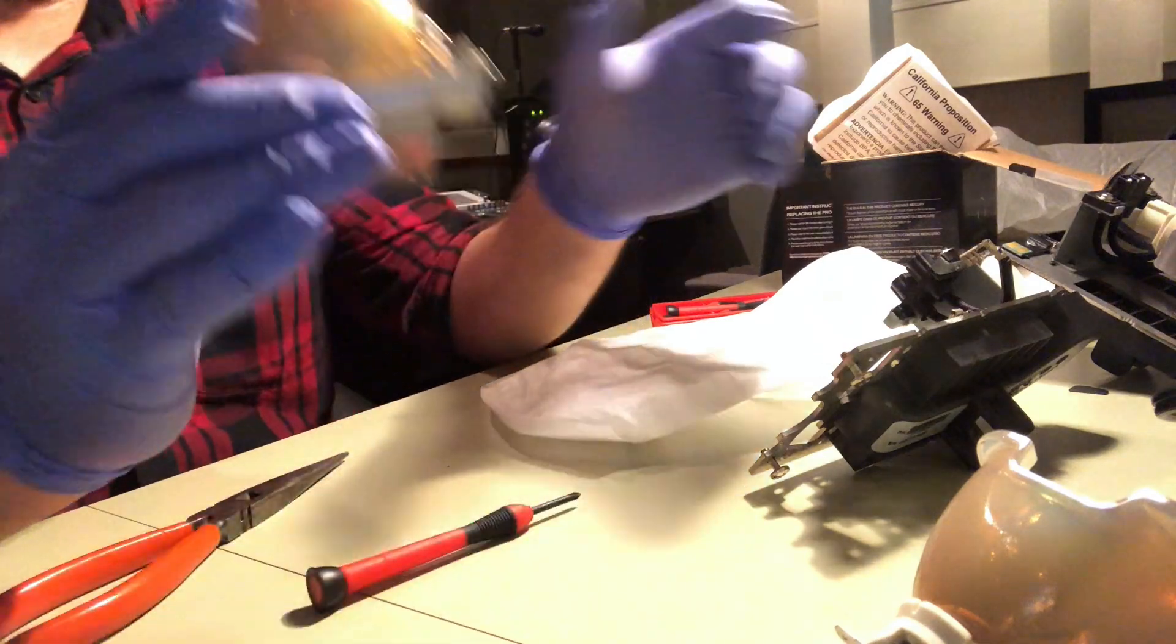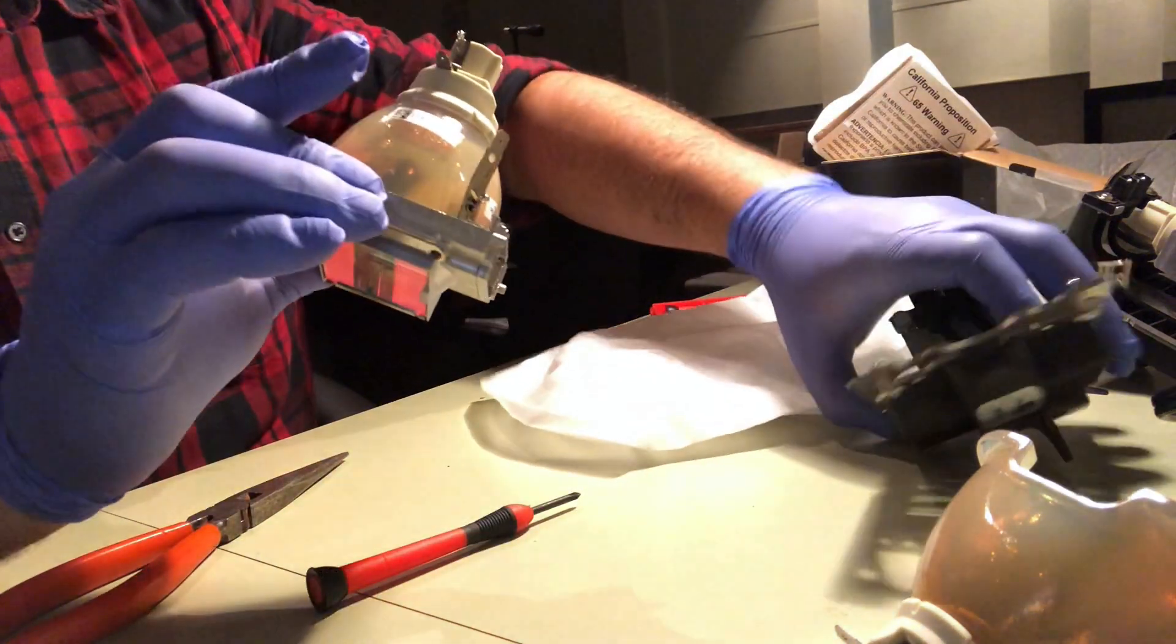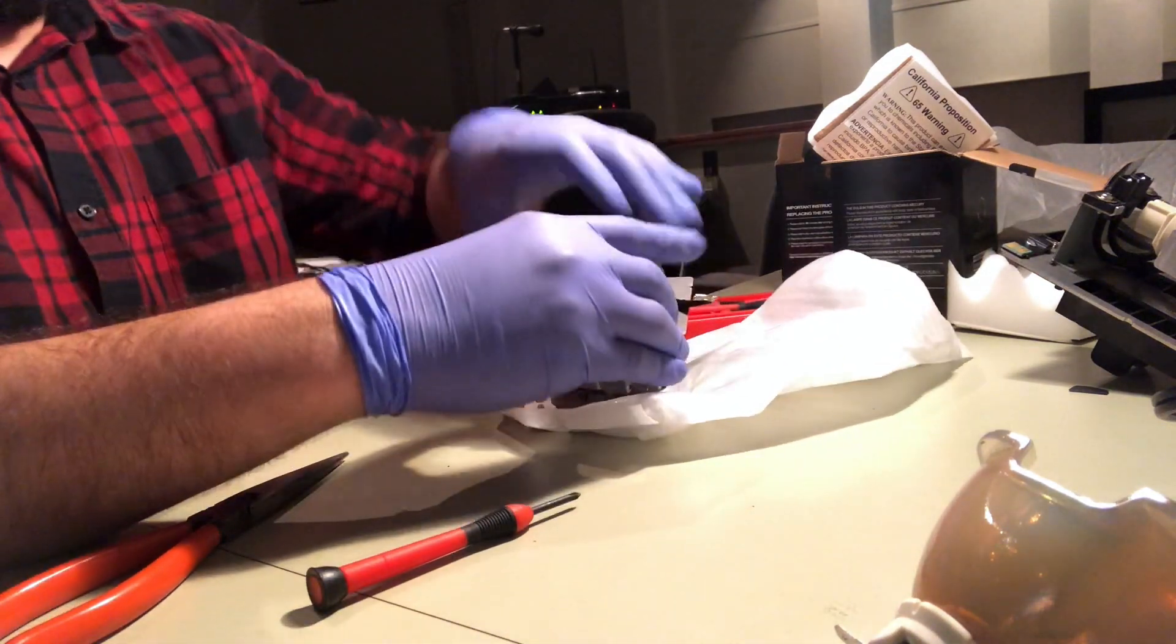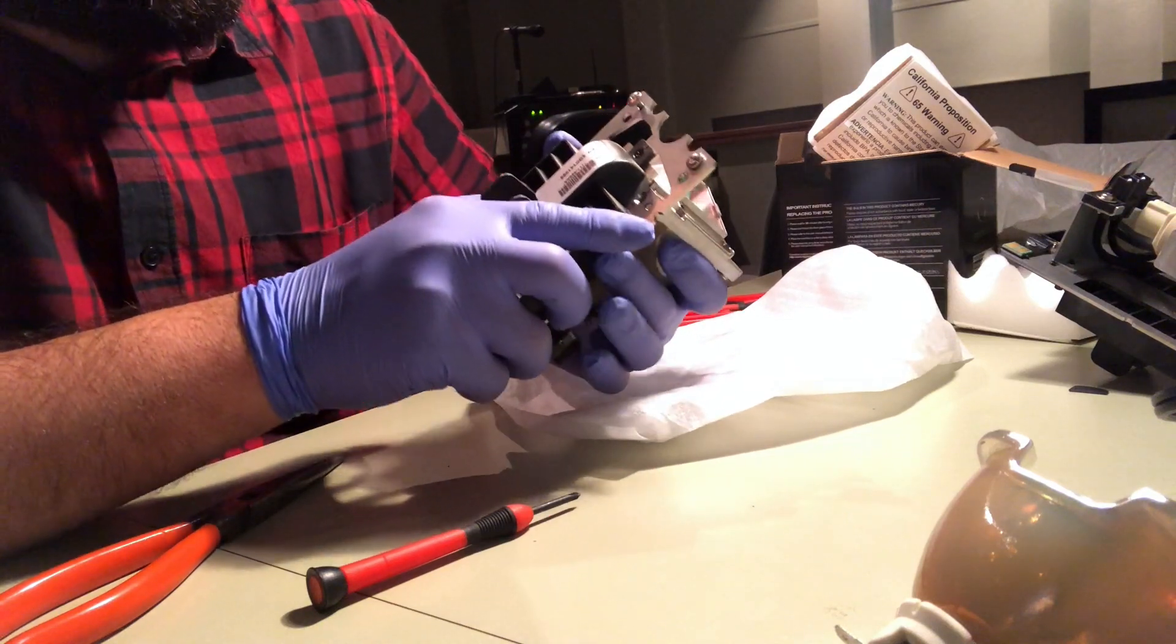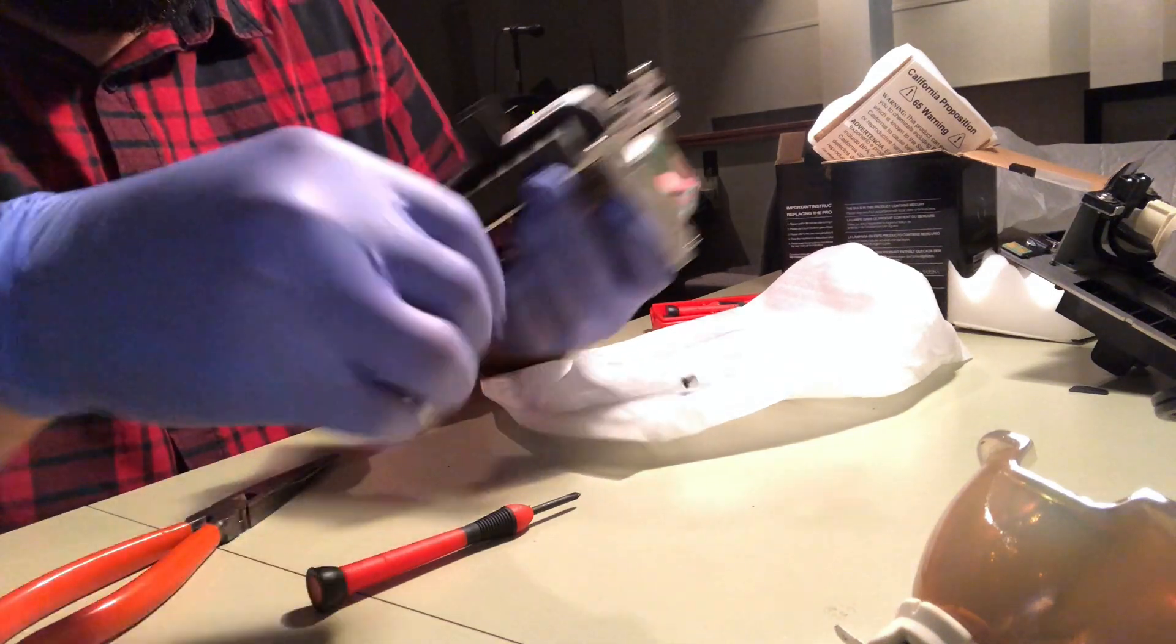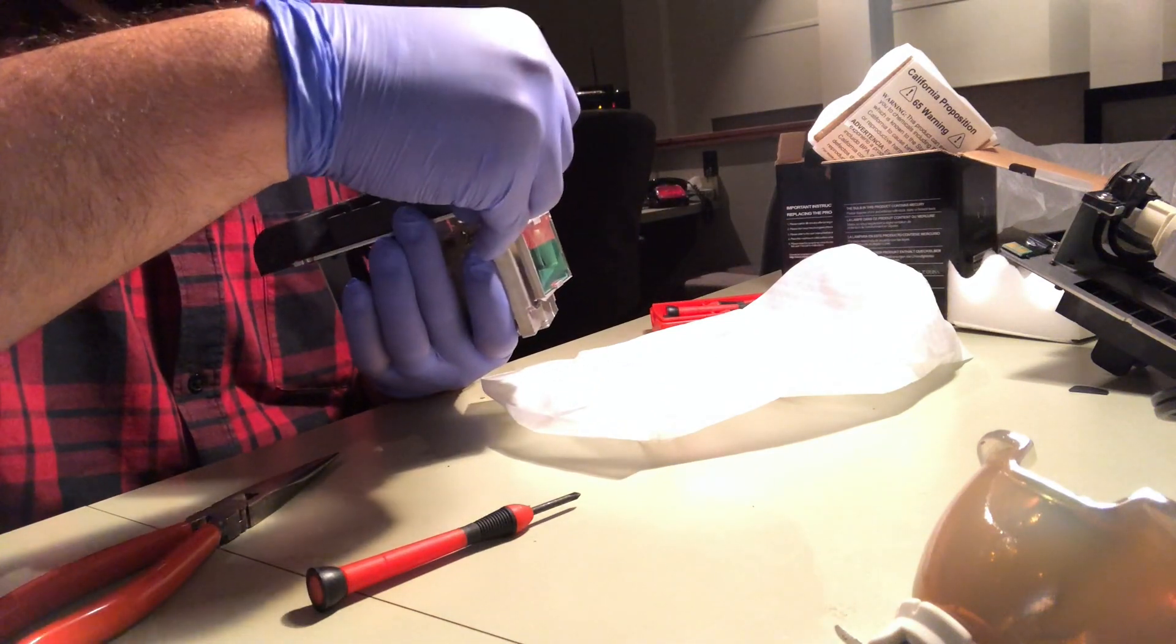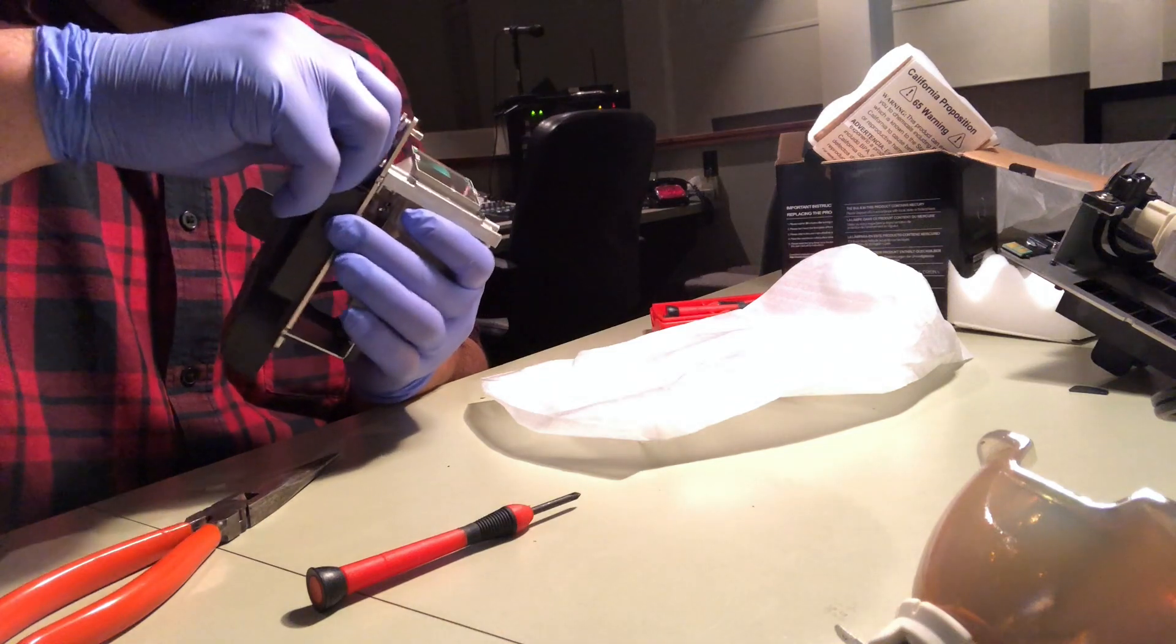So we're going to attach it like so. So here's our little indexing nubs. And so we're going to put those in our hole on the housing. Make sure they're lined up, which is going to allow us to put these black screws back in.